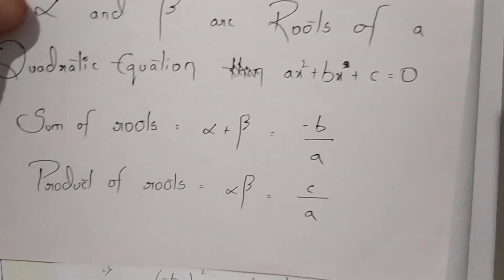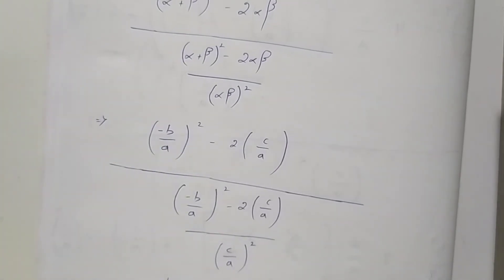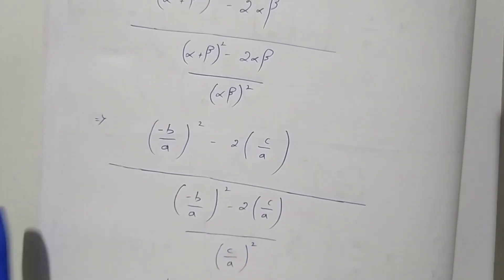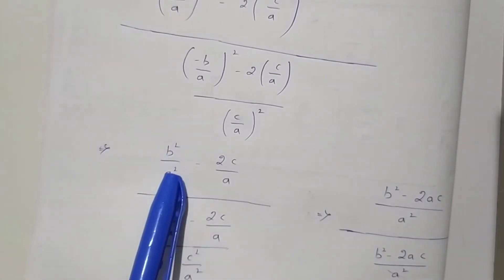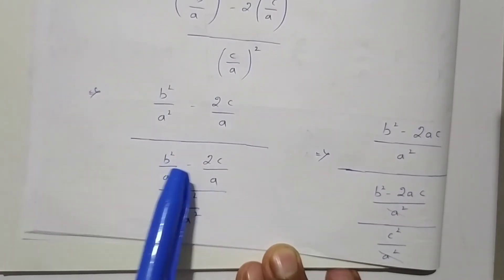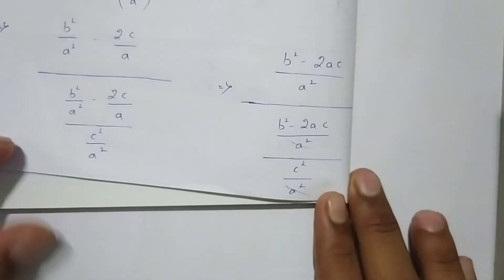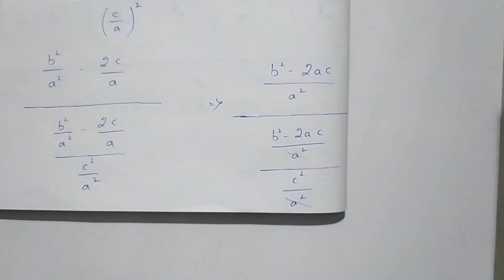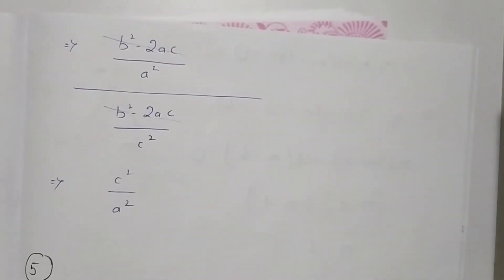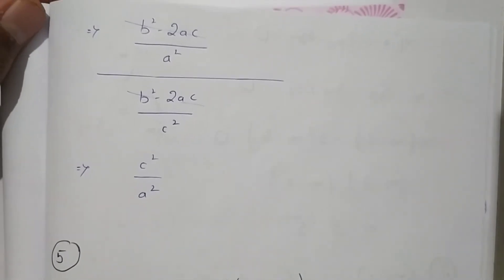The sum of roots is minus b by a, so we substitute minus b by a whole squared, and the product of roots is c by a. In both the numerator and denominator we apply the same rule to get (b squared by a squared minus 2c by a) over (b squared by a squared minus 2c by a) divided by c squared by a squared. Taking LCM and cancelling b squared minus 2ac from numerator and denominator, the final value simplifies to c by a.